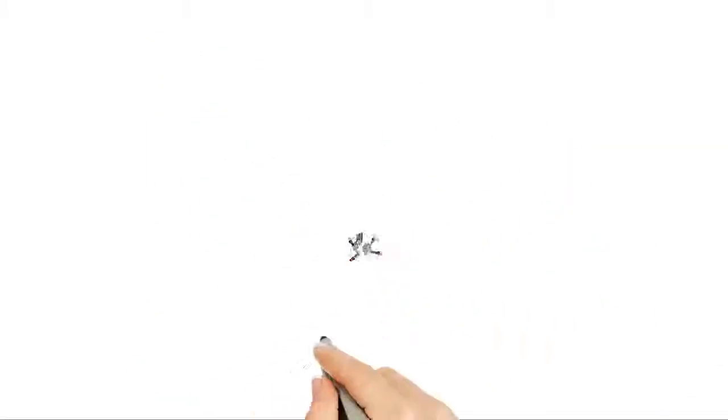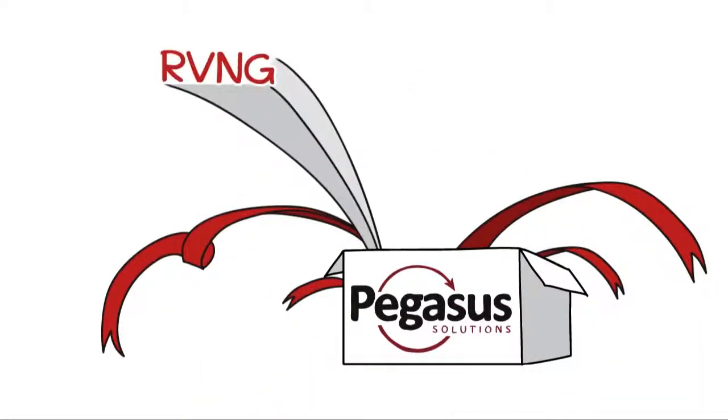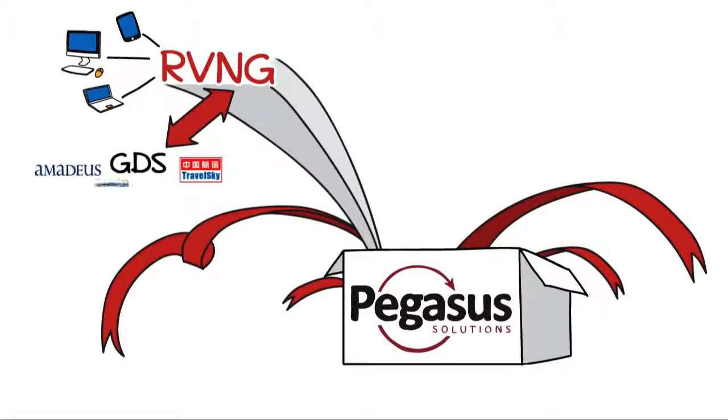You can start small with Pegasus Connect Basic, access RVNG, the only central reservation system built to manage selling hotel rooms in the internet age, and connect to the GDSs.